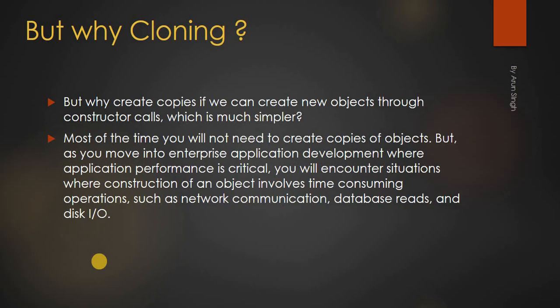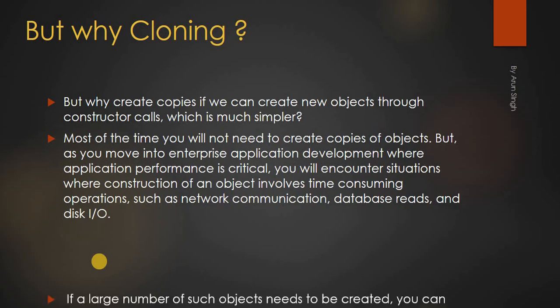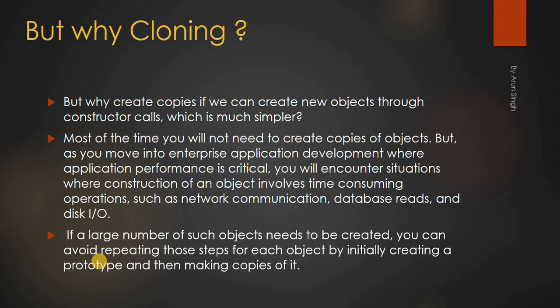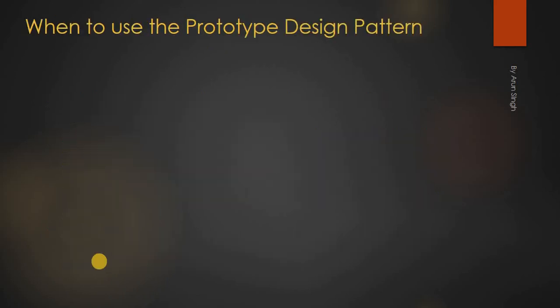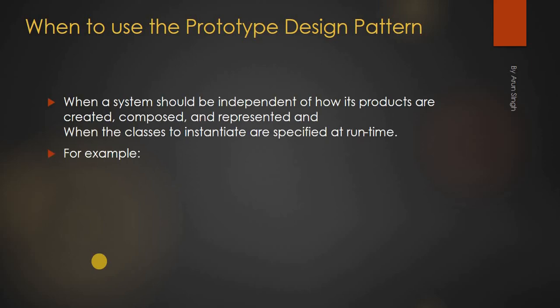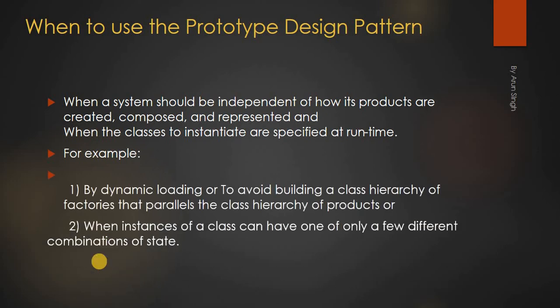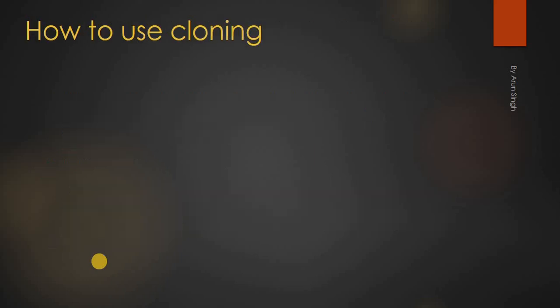If a large number of such objects need to be created, you can avoid repeating those steps for each object by initially creating a prototype and then cloning it. When to use the prototype design pattern: when a system should be independent of how its products are created, composed, and represented; when the classes to instantiate are specified at runtime, for example by dynamic loading; or to avoid building a class hierarchy of factories that parallels the class hierarchy of products; or when instances of a class can have one of only a few different combinations of state.